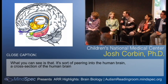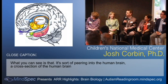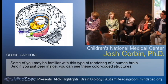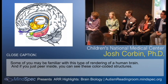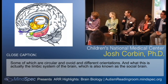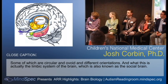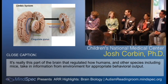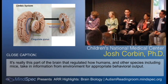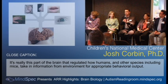What you can see is a sort of peering into the human brain — a cross-section of the human brain. Some of you may be familiar with this type of rendering. If you just peer inside, you can see these color-coded different structures, some of which are circular and ovoid in different orientations. This is actually the limbic system of the brain, which is also known as the social brain. It's this part of the brain that regulates how humans and other species, including mice, take in information from the environment for appropriate behavioral output.